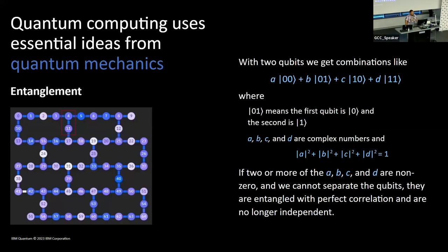Where things get really cool is when we introduce entanglement. If you have two or more qubits, we can get combinations like zero-zero, zero-one, one-zero, one-one, each with complex coefficients A, B, C, and D. If two or more of these coefficients are non-zero, then we cannot separate the qubits — they are entangled with perfect correlation and are no longer independent of one another. Einstein used to refer to this as spooky action at a distance.